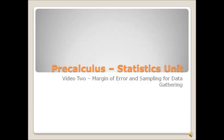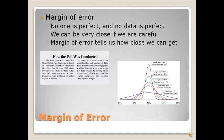Margin of error is an important thing to consider when we're looking at statistics, and being able to sample a population appropriately is an important part of what you'll need to do as a researcher. Margin of error talks about the error that is inherent in any data that we gather. As you know, no one is perfect, and no data is perfect, but we can be very close if we are careful.